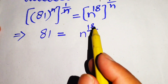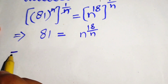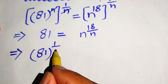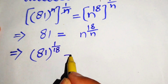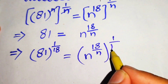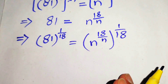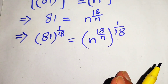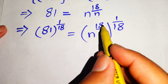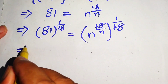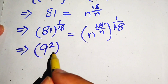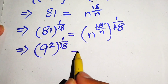In the next step, we move 18 to the left hand side by taking the 18th root on both sides. We get 81 to the power of 1 over 18 equals n to the power of 18 over n, whole power 1 over 18. The 18's cancel on the right hand side, and we rewrite 81 as 9 squared, so we have 9 squared to the power of 1 over 18.